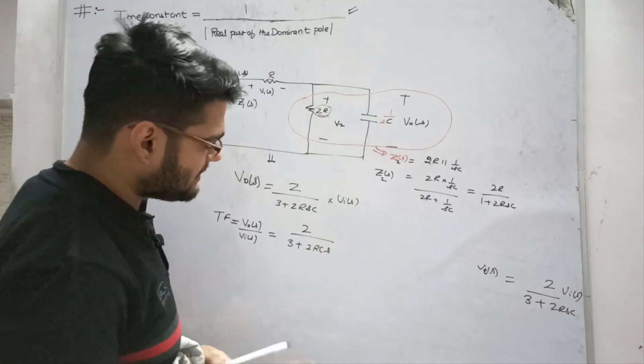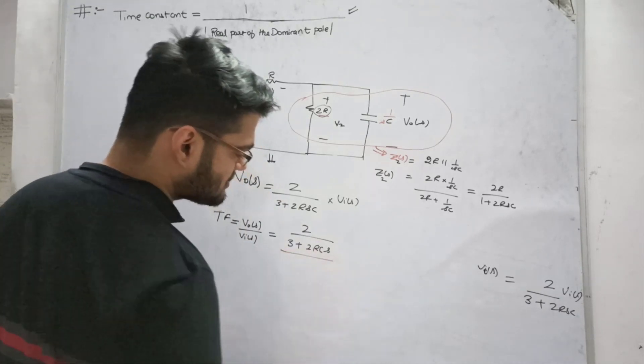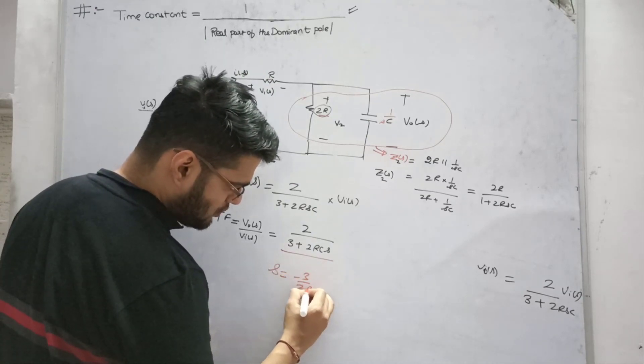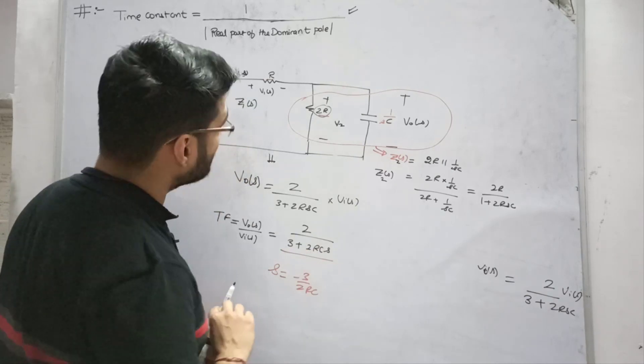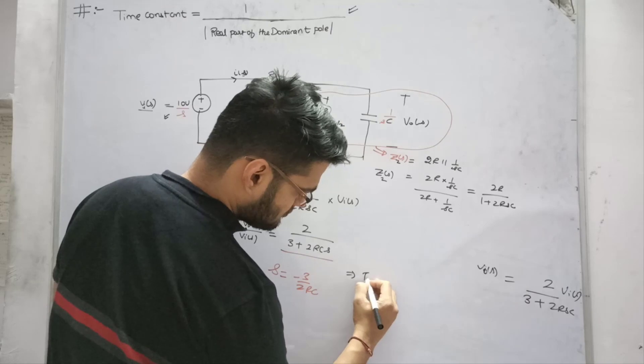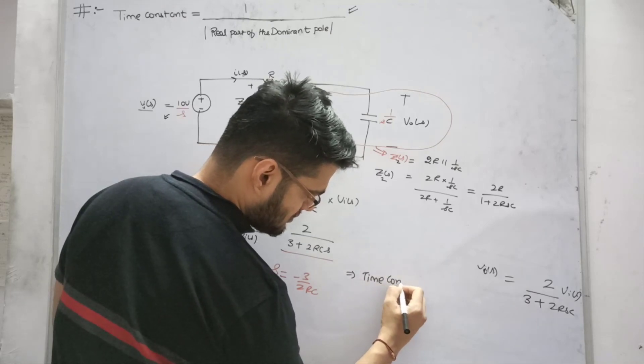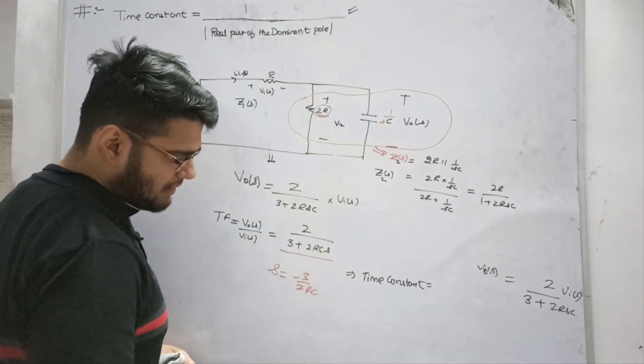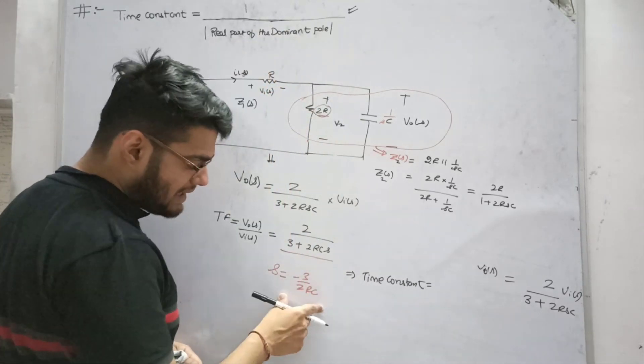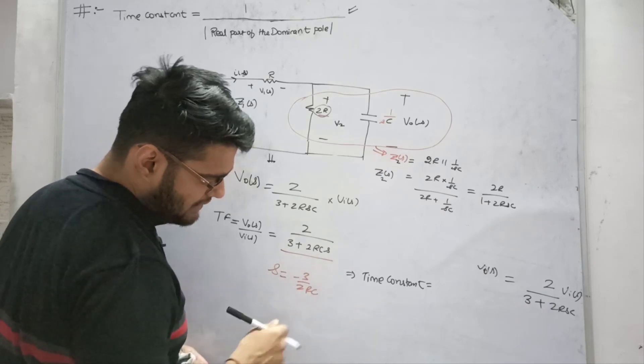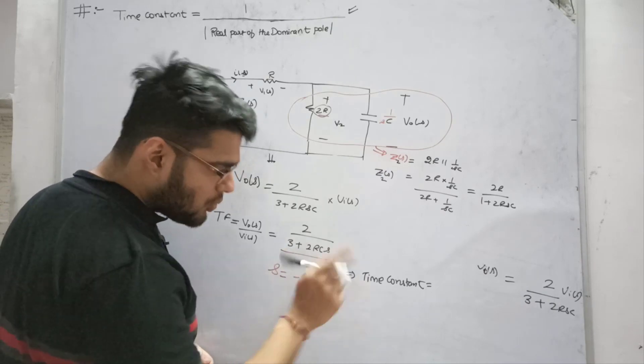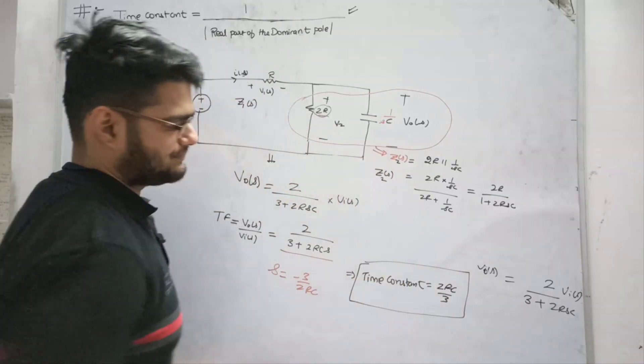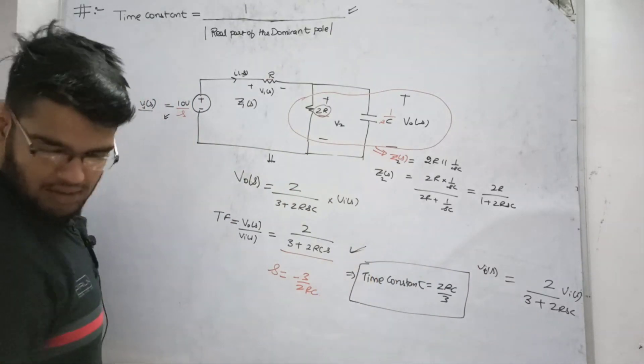Now let me see the poles. You can see the poles. S is equal to minus 3 by 2RC. This is a purely real pole. What did I tell you about the starting point? What is the time constant? It is 1 upon real part of dominant pole's magnitude. If it's a single pole, it's totally dominant. Its real part is purely real. Now the magnitude is - this is plus 3 by 2RC. Then the time constant will be 2RC by 3.